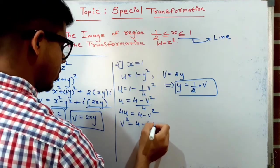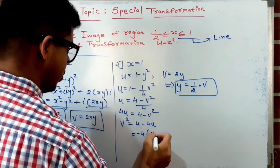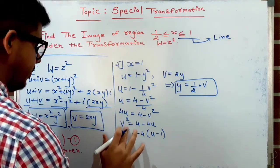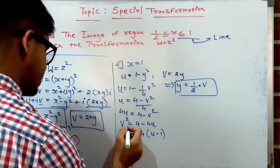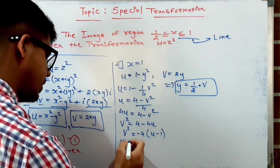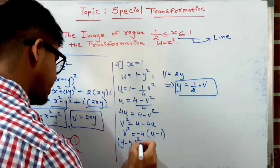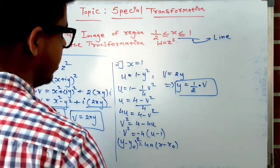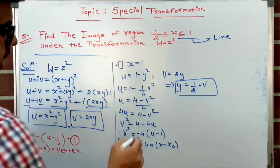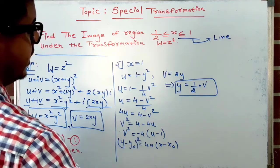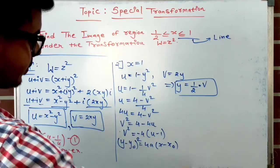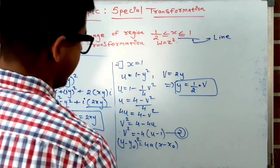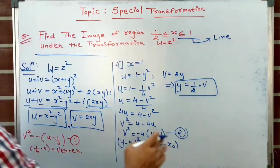Taking −4 as common: v² = −4(u − 1). This is the equation of the second parabola. Comparing with the standard form, the vertex is (1, 0) and 4a = −4, so this parabola is also negative and faces the negative u-axis.